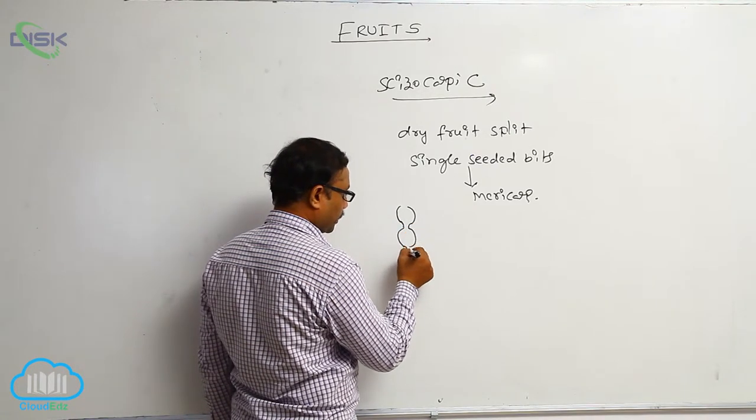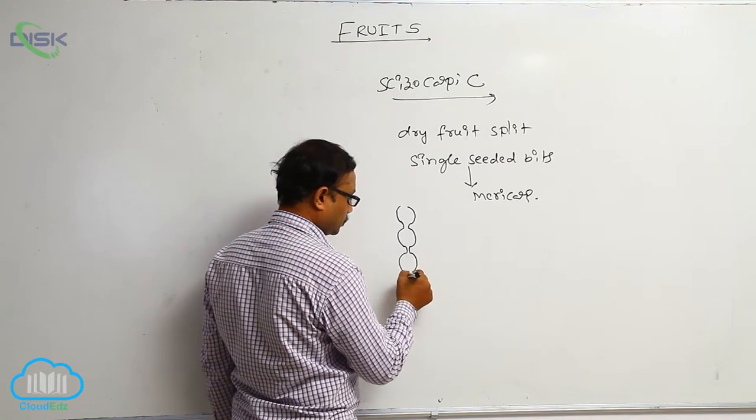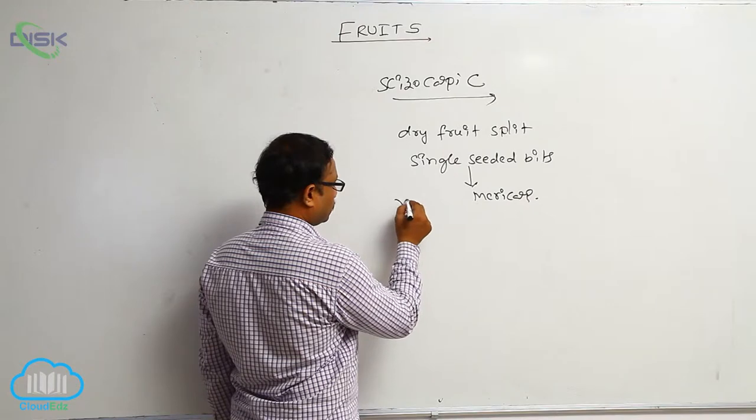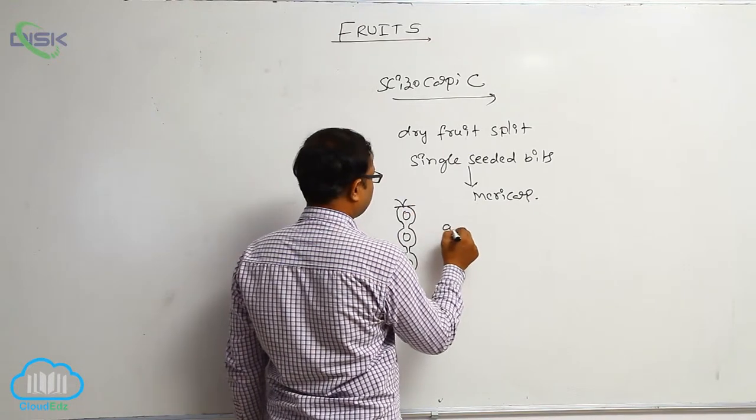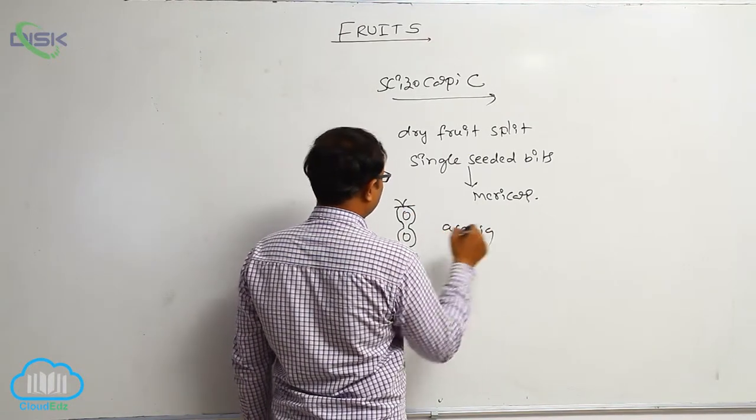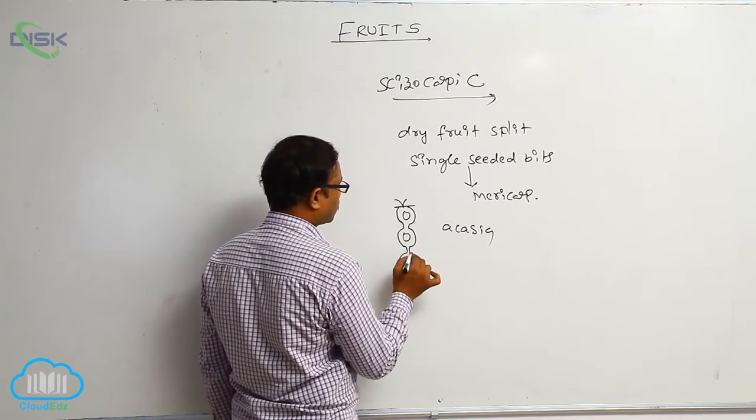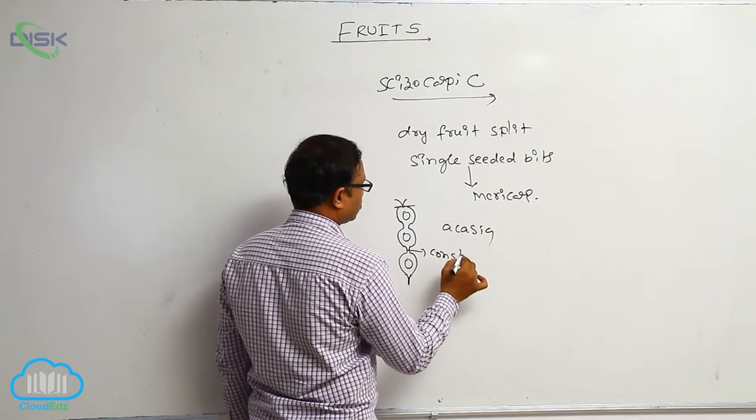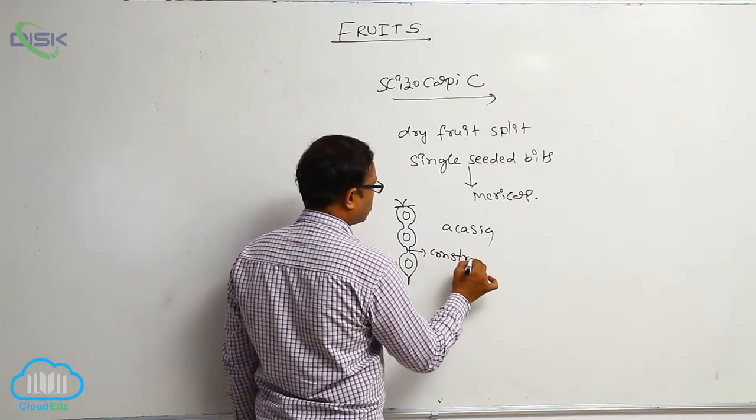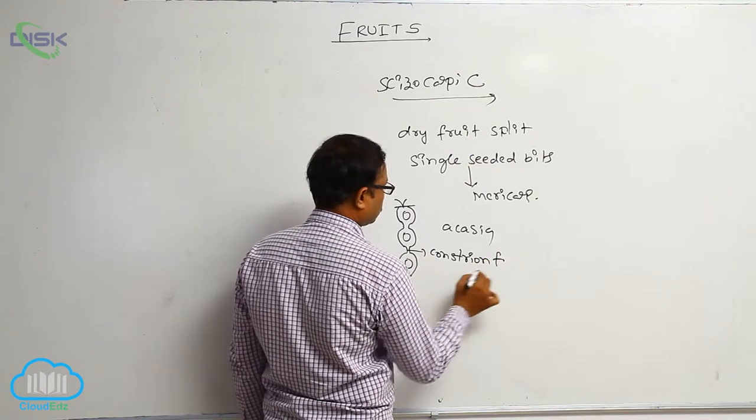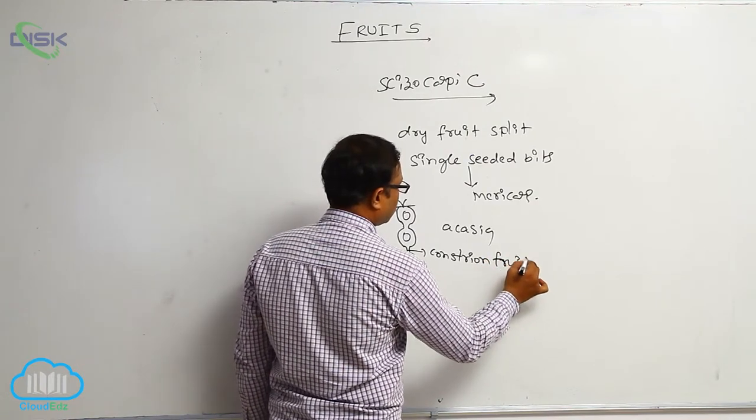For example, you take that. It is a fruit, these are the seed. It is acacia. In acacia, first one is constrictions. These are the constrictions which fruit is having. Example, acacia.